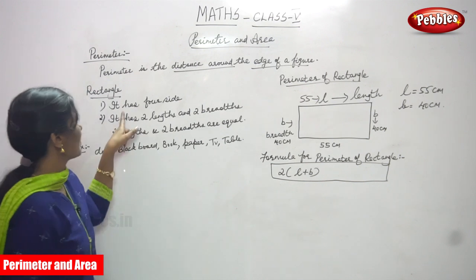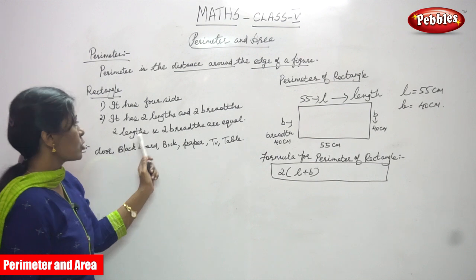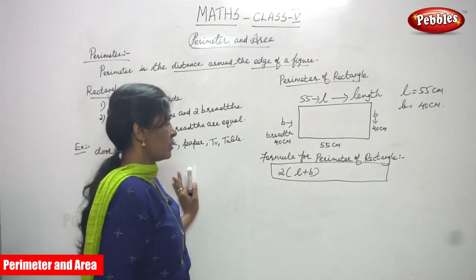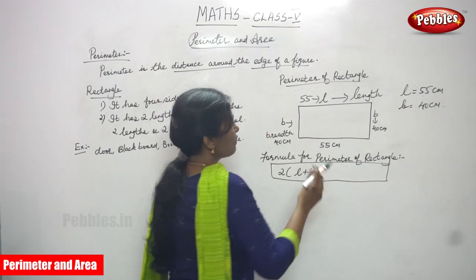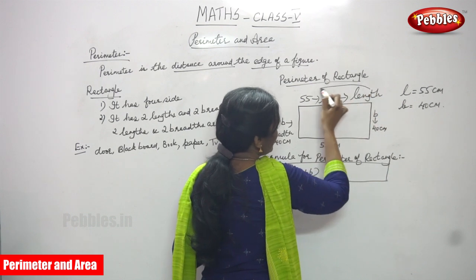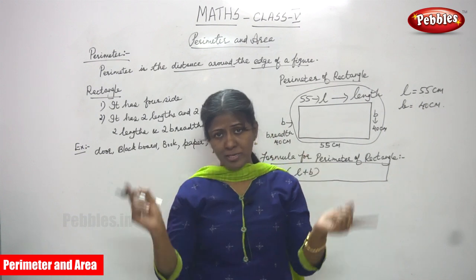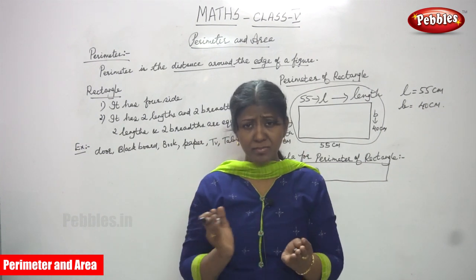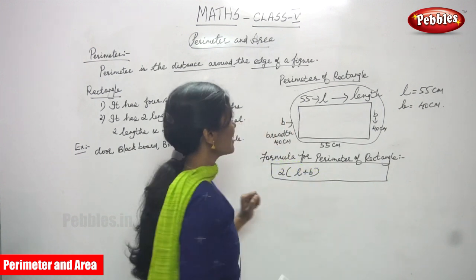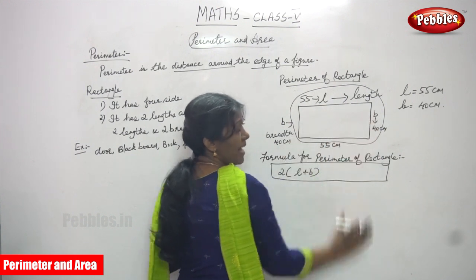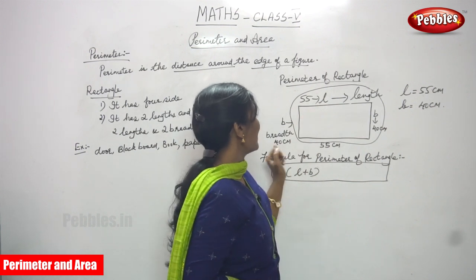The properties of a rectangle: it has four sides, two lengths and two breadths, and the two lengths and two breadths are equal. Perimeter is the distance around the edge of the figure — the outer side of the shape. So consider this rectangle: this is the length and this is the breadth.